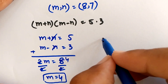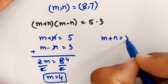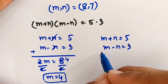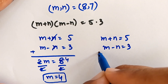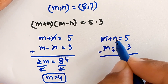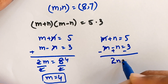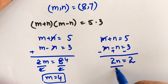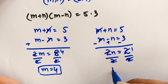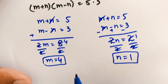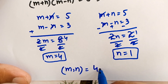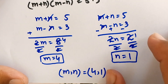To find n, we subtract the two equations: m plus n equals 5 minus m minus n equals 3. The m terms cancel, leaving 2n equals 5 minus 3 equals 2. Dividing both sides by 2, n equals 1. So from case two, m equals 4 and n equals 1.